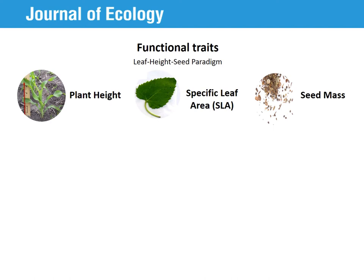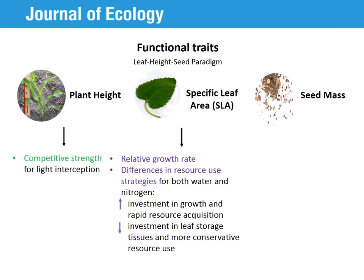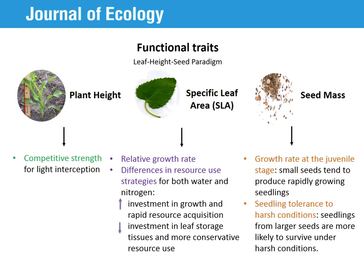We searched for a relationship between the variation in biotic resistance towards different ornamentals and the variation in their functional traits. Specifically, we measured three traits that are considered to represent key axes of plant ecological strategies. Plant height is associated with competitive strength for light interception. Specific leaf area, or SLA, is positively correlated with relative growth rate and reflects species differences in resource use strategies for both water and nitrogen. While higher SLA values indicate investment in growth and rapid resource acquisition, lower SLA values indicate investment in leaf storage tissues and more conservative resource use. Finally, in the context of our experiment, seed mass is mostly related to growth rate at the juvenile stage, as small seeds tend to produce rapidly growing seedlings, and also to seedling tolerance to harsh conditions, as seedlings from larger seeds are more likely to survive under harsh conditions. Together, these traits inform about the species' overlap in resource use strategy and about the relative competitive ability in terms of competitive responses.